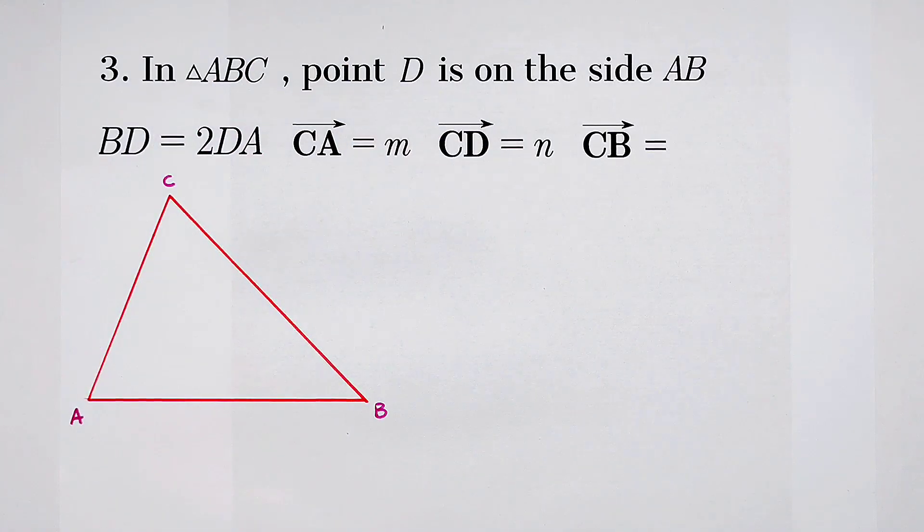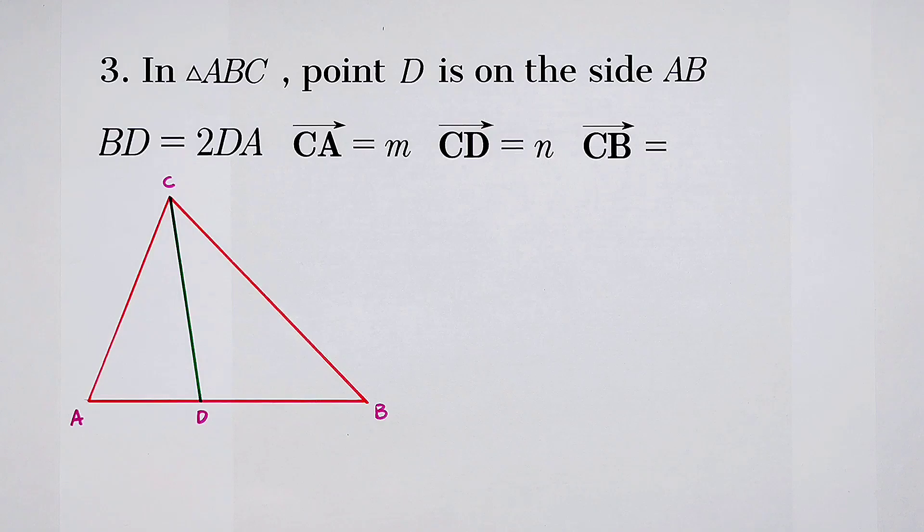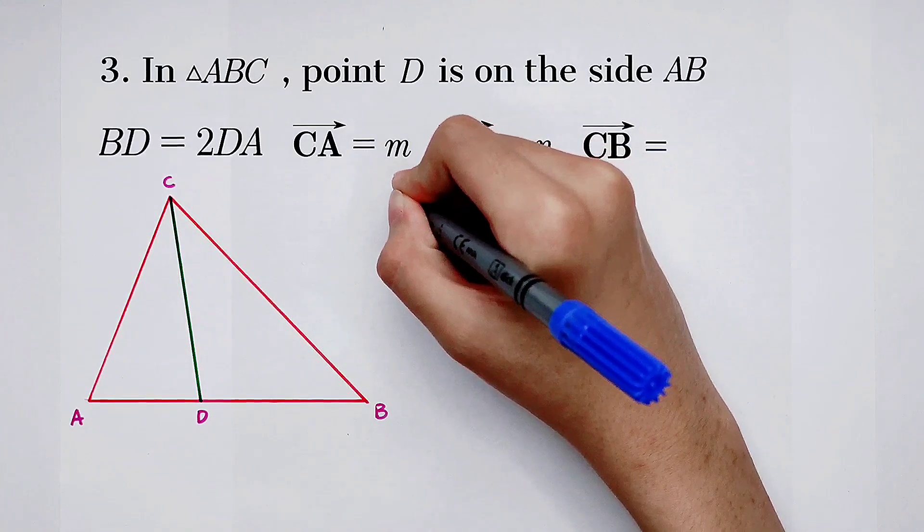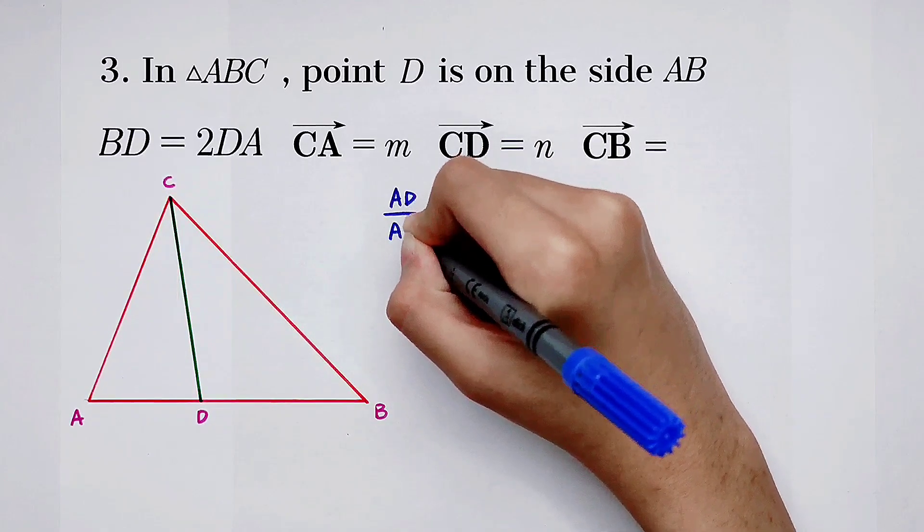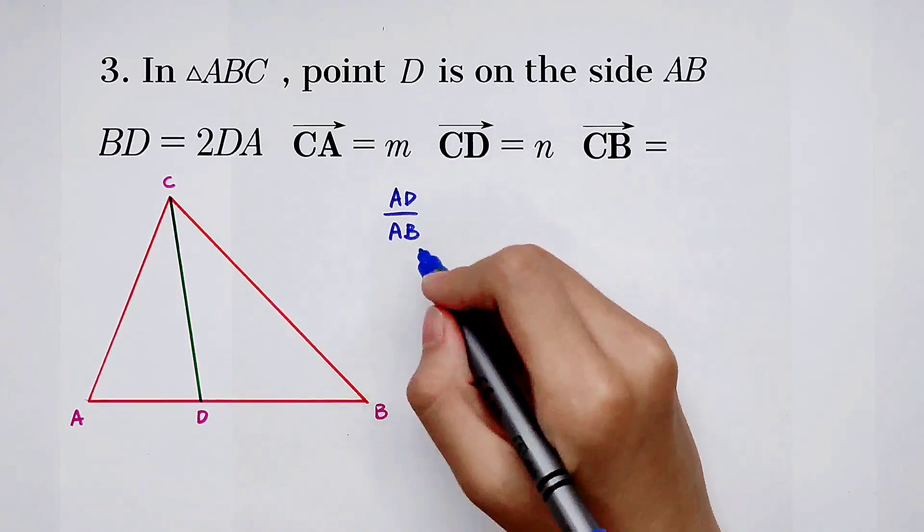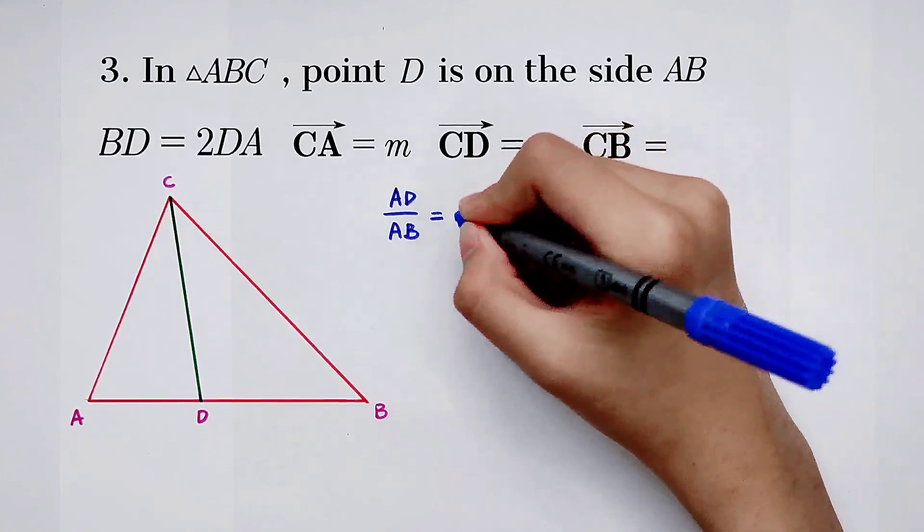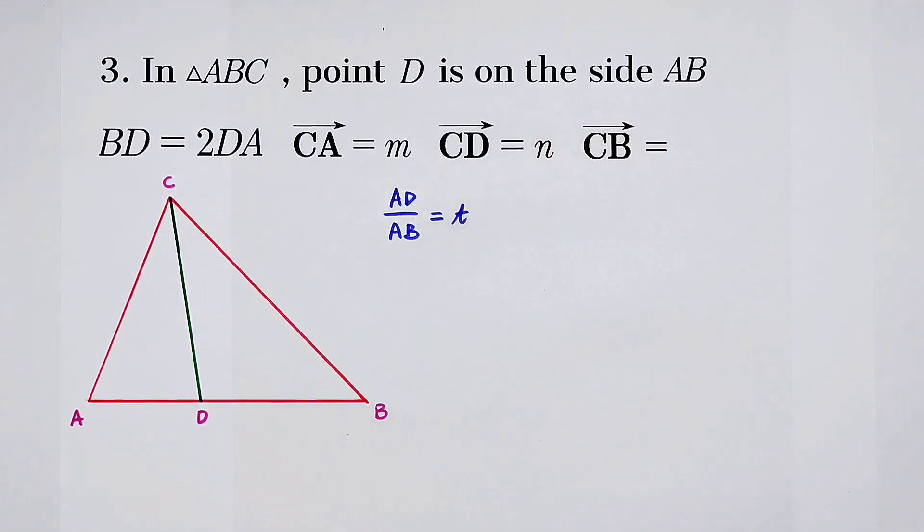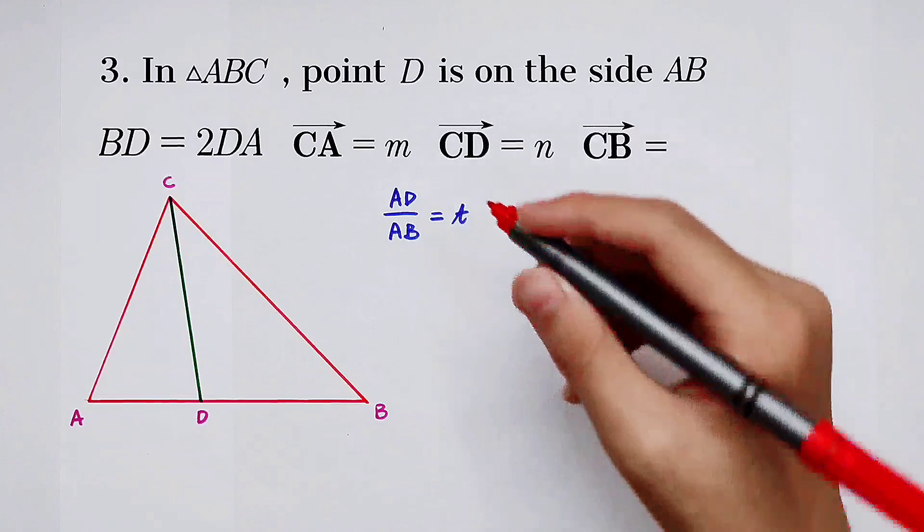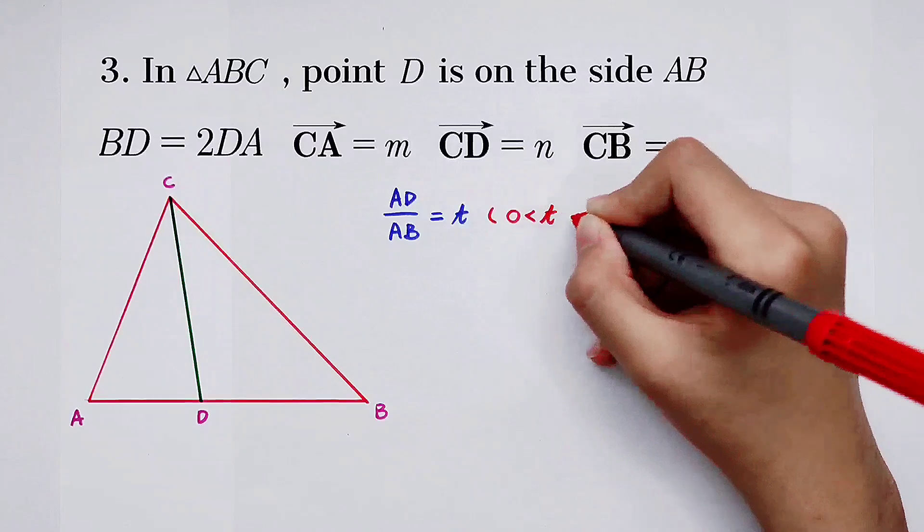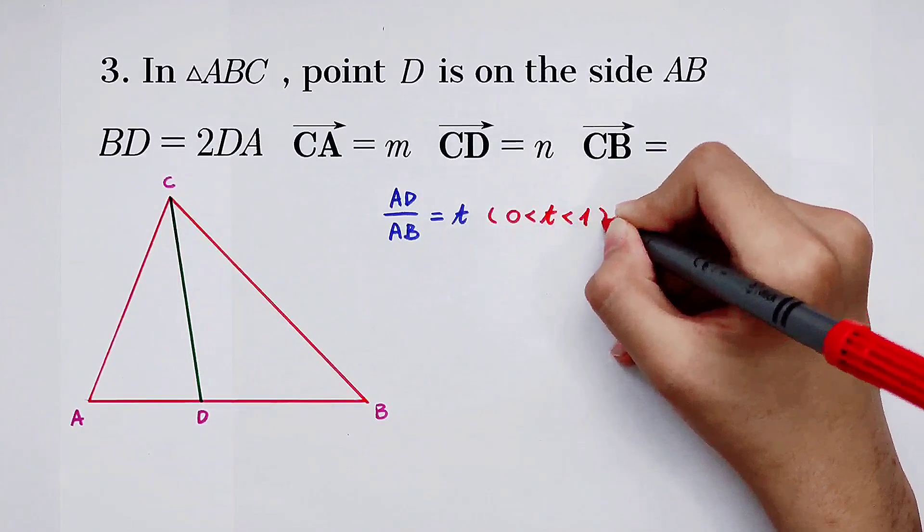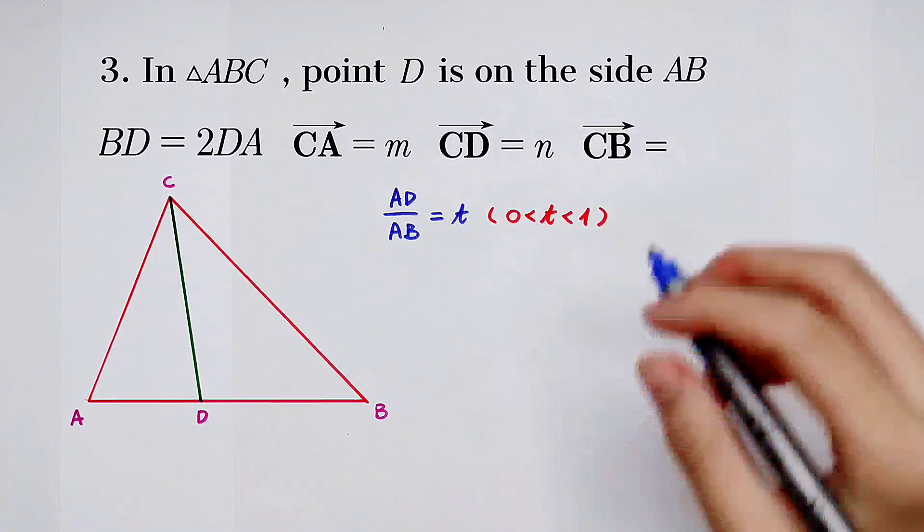Not special, a common triangle. Now I want to prove a formula. Suppose AD divided by AB, the ratio of AD and AB, suppose it is T. Because D is on the side AB, so AD divided by AB is T. T is greater than 0 and smaller than 1.